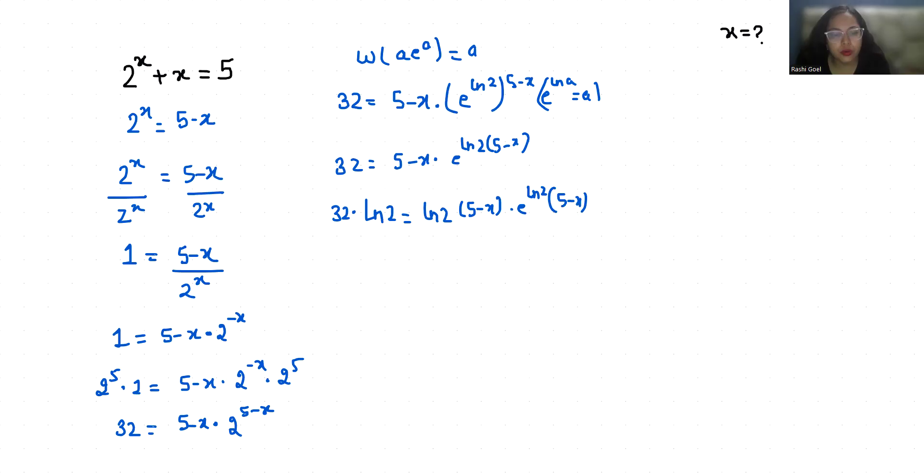W(32 ln 2) equals W of (ln 2)(5-x) times e^((ln 2)(5-x)).